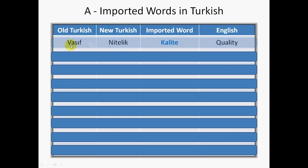In Turkish, there are different words with the same meaning. So, Vasıf, Nitelik and Kalite all mean the same thing. Vasıf is an old word, Nitelik is a new word and Kalite is an imported word from Western languages. For several reasons, some people prefer to use mostly the old words, some others prefer the new words and others prefer the imported ones.